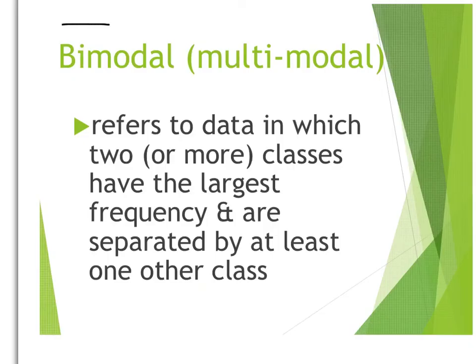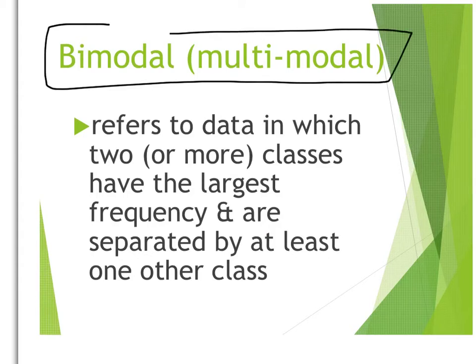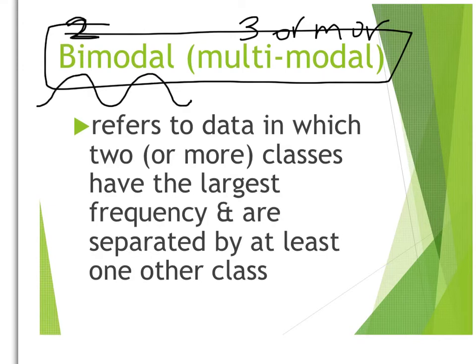The last type of distribution is a bimodal or multimodal distribution. Those are going to be distributions that have more than one mound. Bimodal distributions have two mounds, and multimodal would be three or more. We've already seen a unimodal distribution, which was the bell shape. Bimodal would look something like this, and multimodal might look like this. The mounds don't have to be exactly the same height, but you do see definite differences in the distribution.